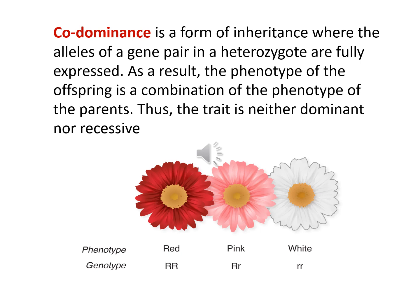This is another example of co-dominance. The phenotype of the offspring is the combination of the phenotype of both parents. The character or trait is neither dominant nor recessive. You can see the red and white together will give birth to a pink color flower. Isn't it interesting?